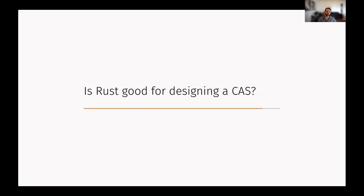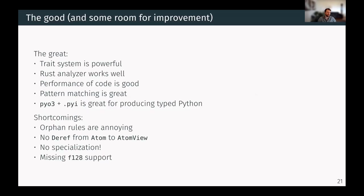So is Rust good for designing a computer algebra system? Well, I'd say yes. The trait system, as I just showed, is very powerful. Performance of code is pretty good. And one thing is the Python API, PyO3 plus a custom pyi file is great for producing typed Python.